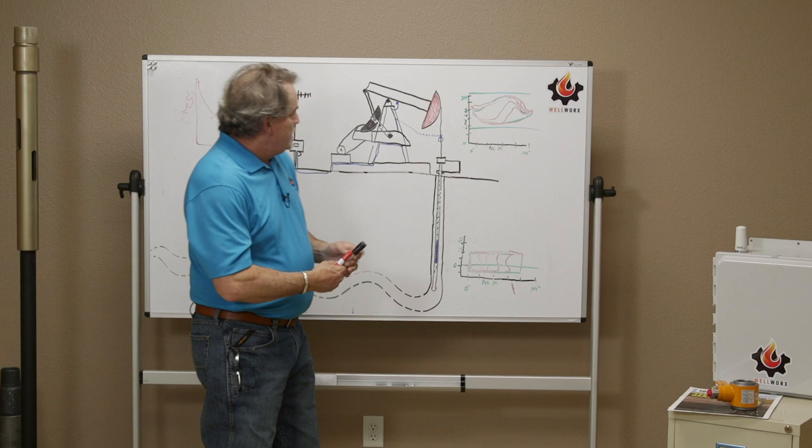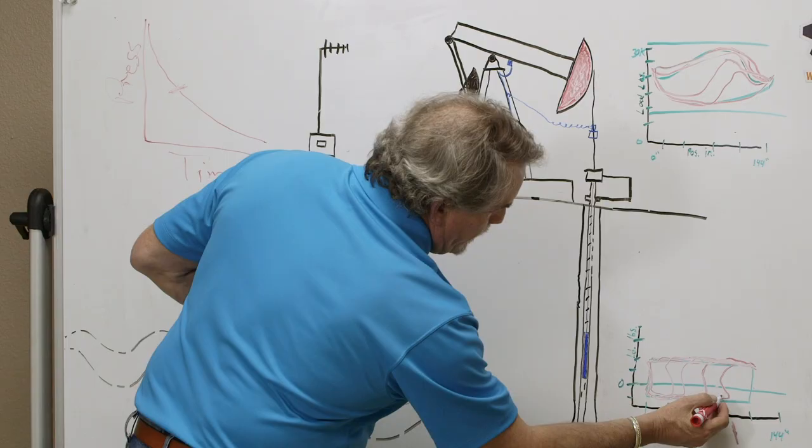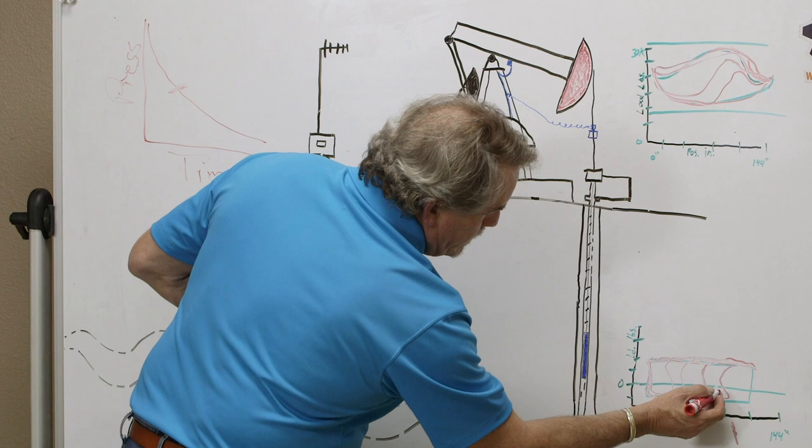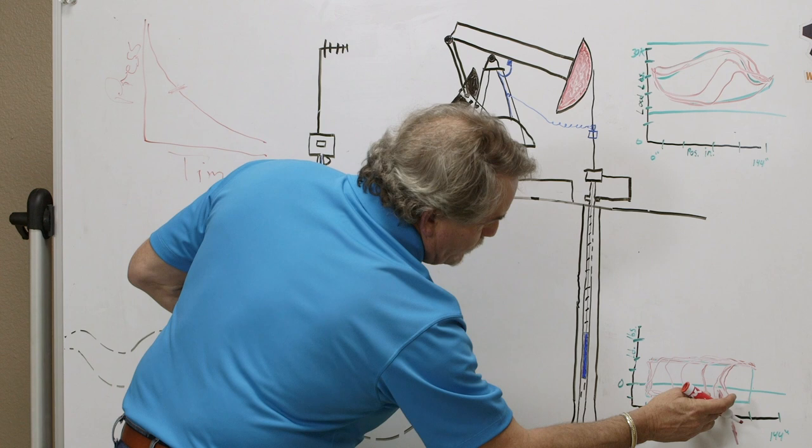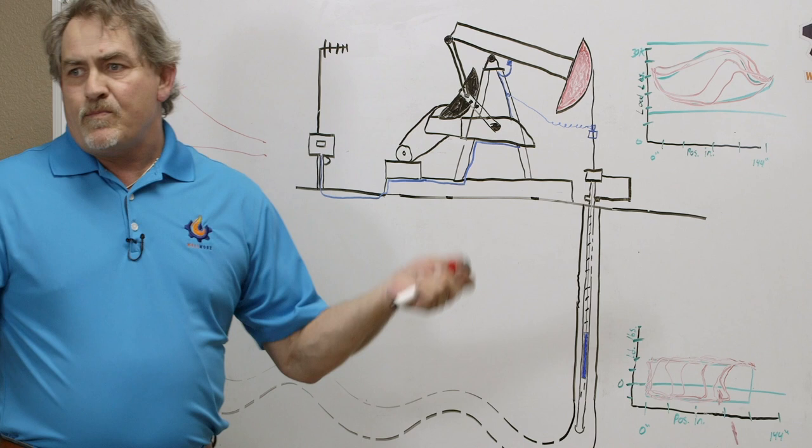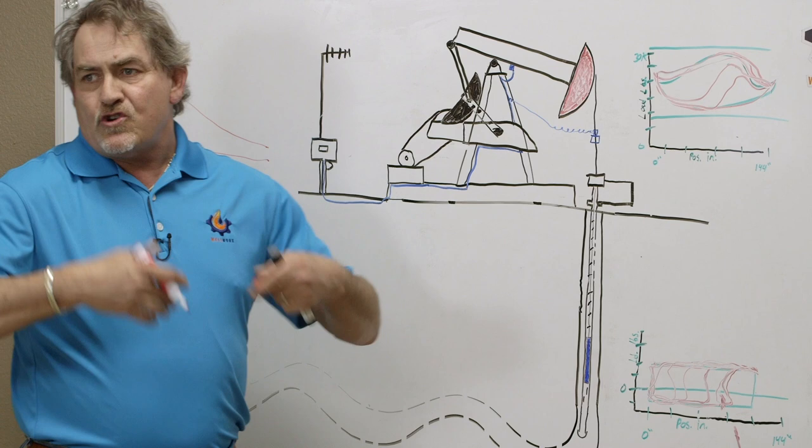So what we can do, we have a pump off controller back here. So the pump off controller, we can set a pump fillage set point. Somewhere in here, let's say that's 75%. And as the fluid in the barrel of the pump starts to decrease, and we pass that threshold, we have the opportunity with the controller to shut the pumping unit off. Allow the wellbore to replenish itself. So we go into downtime for some period, and then we'll start up again. And we repeat the process, and when we start to see incomplete fillage, we shut off again.